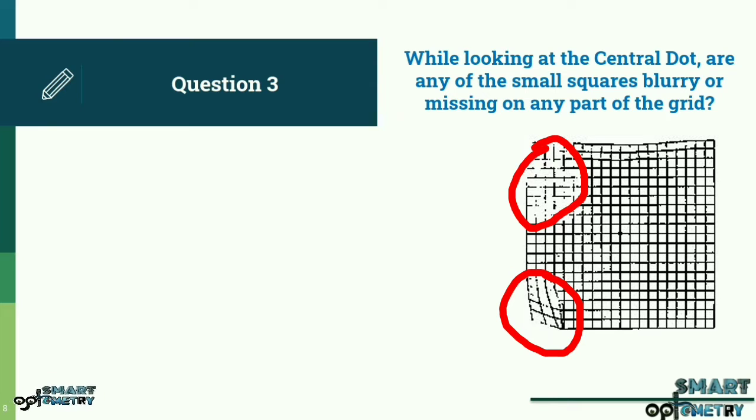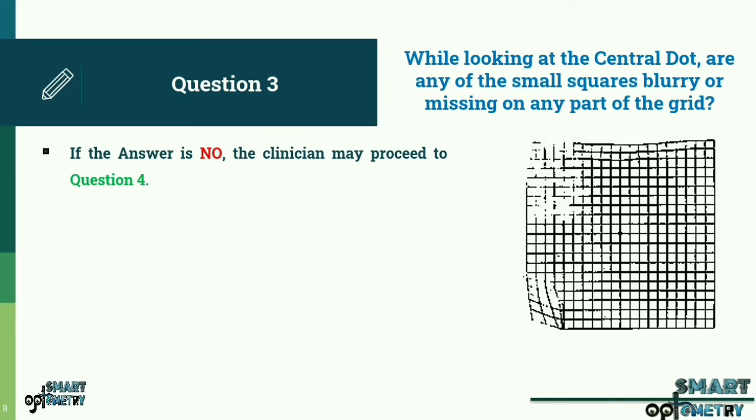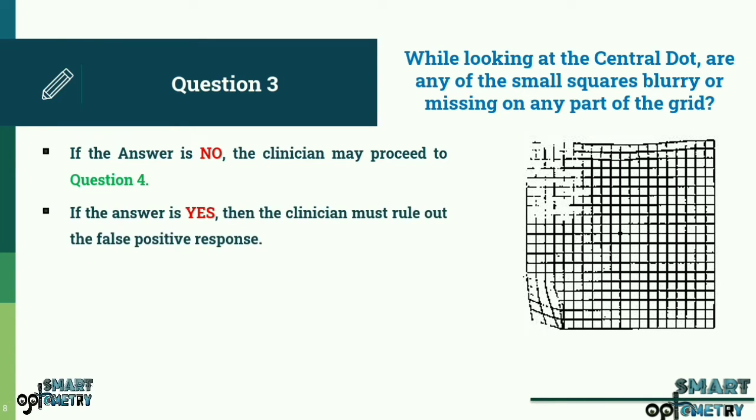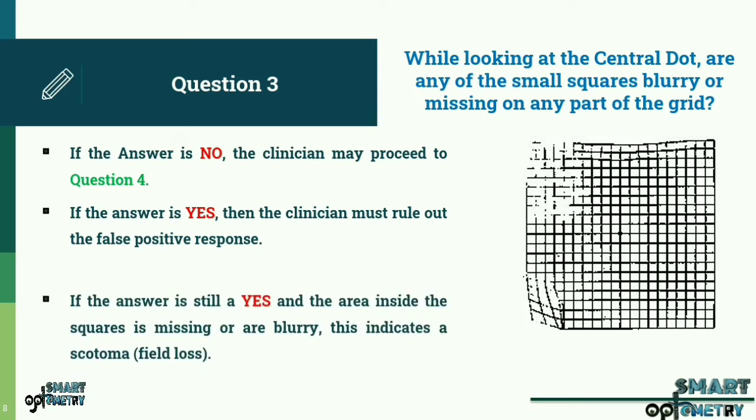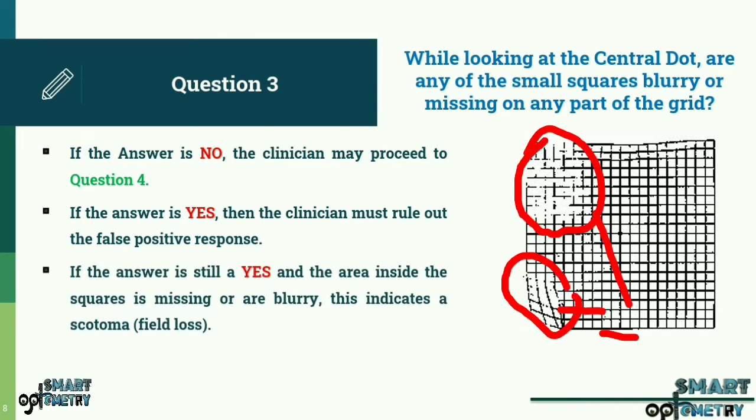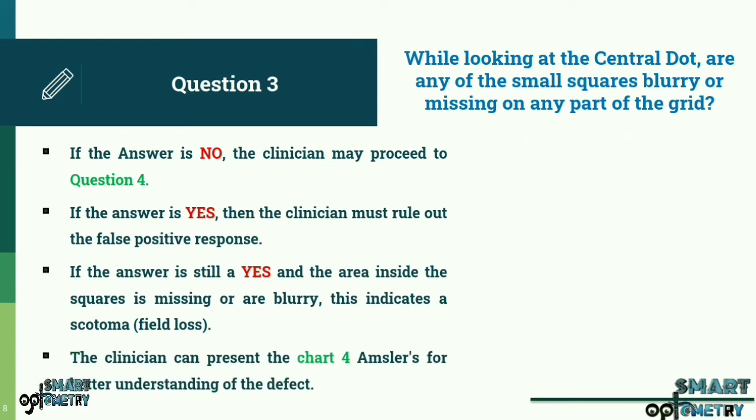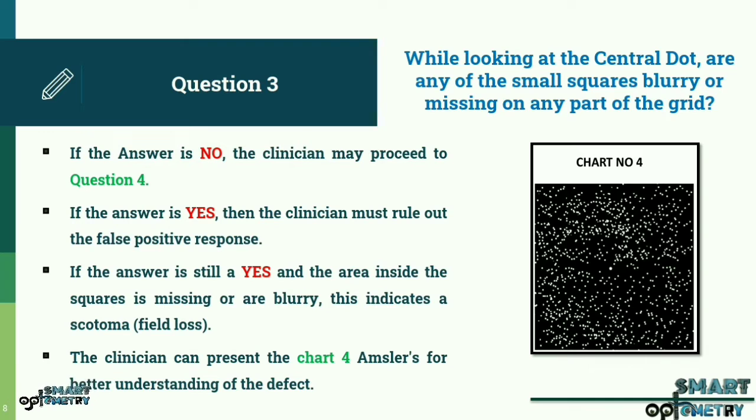Question 3: While looking at the central dot, are any of the small squares blurry or missing on any part of the grid? The patient is asked to continue looking at the central dot while answering. If the answer is no, the clinician may proceed to question 4. If the answer is yes, then the clinician must rule out the false positive response error that may occur due to the presence of any media opacities or due to incorrect prescription worn by the patient. If the answer is still a yes and the area inside the squares is missing or blurry, this indicates a scotoma, field loss. The patient must locate the area with the missing or blurry squares, outline it with a pen and record it on the chart. The clinician can present the chart 4 Amsler's for better understanding of the defect.